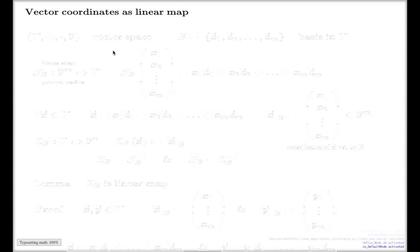Vector coordinates as linear map. The concept itself we have discussed maybe two or three weeks ago, and you spent some time on these concepts in your tutorial classes. On this slide, I will have a vector space, canonical quadruple, like this.